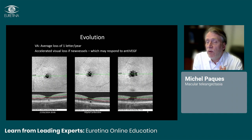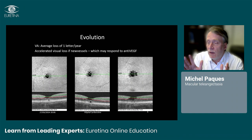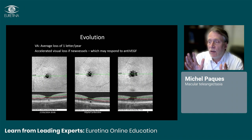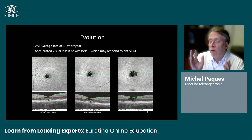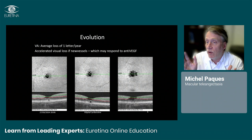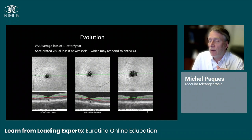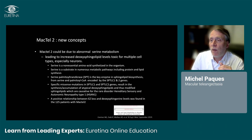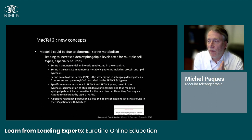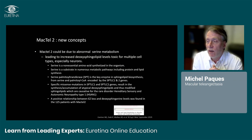Regarding the evolution of Mac-Tel type 2, it is usually a slowly evolving disease. Long-term studies have shown an average loss of one letter per year. However, in the absence of acute complications such as subretinal new vessels, it can follow a completely different pathway. I thank the Lariboisière Hospital Ophthalmology Department, who sent me most of these slides on Mac-Tel type 2.